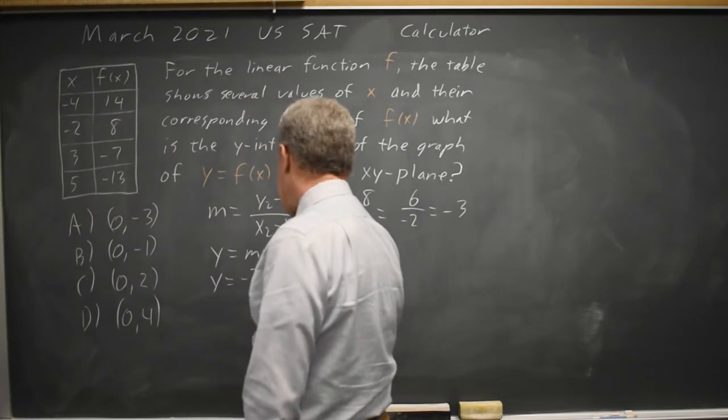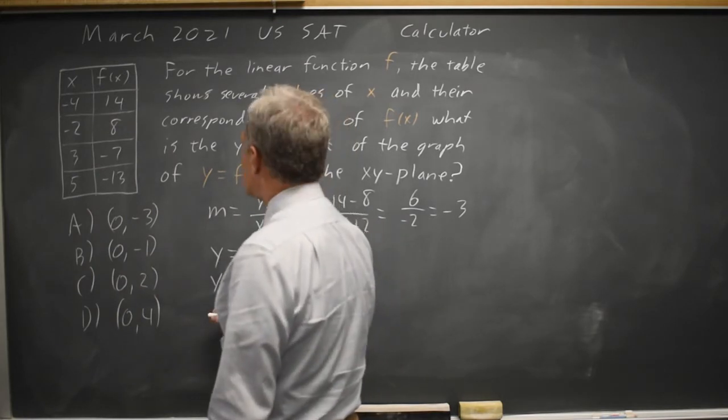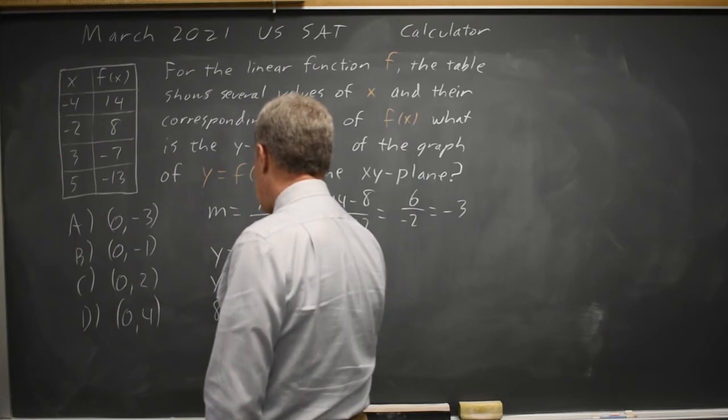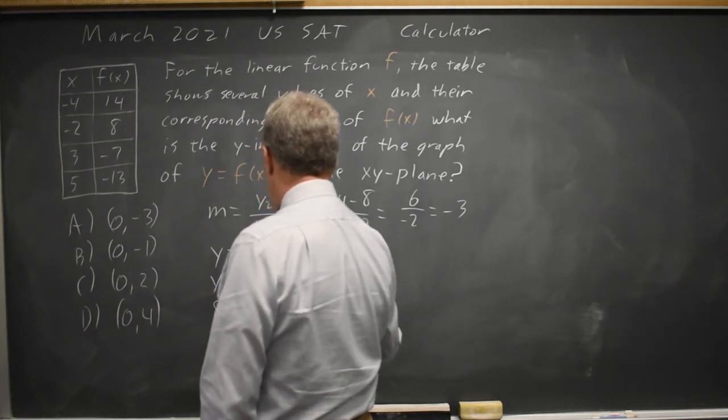I swapped them, we need to be careful about that. The y value is 8 equals negative 3 times the x value of negative 2 plus b.